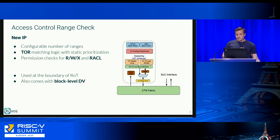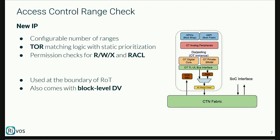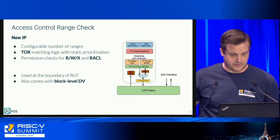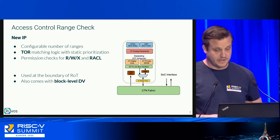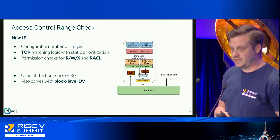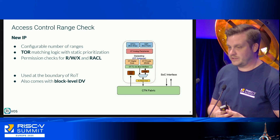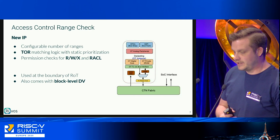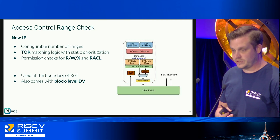A second new IP recently added is called AC ranges, or Access Control Range Check, which is an IO-PMP-like device that you can place on the TLUL bus. It allows you to filter requests based on address attributes like read, write, or execute, and RACL, which will be discussed shortly. OpenTitan is very keen on good DV, so all these features come with DV and there is a very strict sign-off process to release a version of an IP.